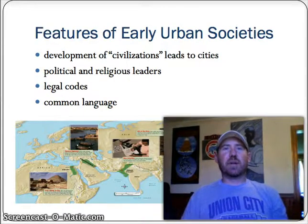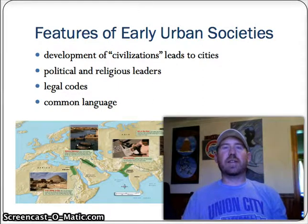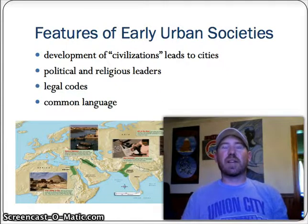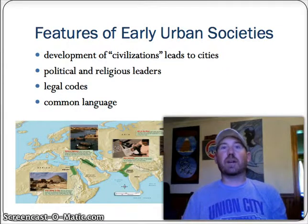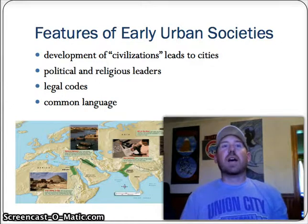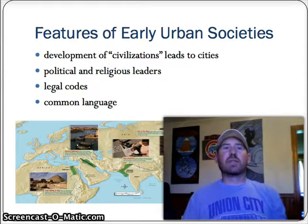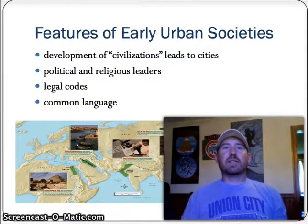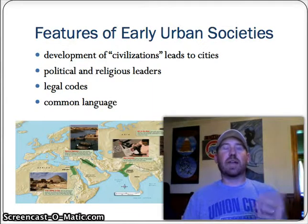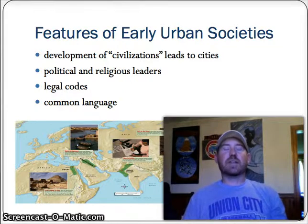Next on our list is the features of early urban societies. Once the Neolithic Revolution happens, you begin to see agricultural settlements, and as these settlements get bigger, they begin to show the markings of civilization — and one key component is cities. Some features: you have political and religious leaders who are often intertwined, sometimes the same person. You also have legal codes such as the Code of Hammurabi or the Code of the Assyrians. You need to think about how they differentiated between social hierarchies — were the punishments the same for people at the top and bottom of the chain? You also see the development of a common language from people living together and conducting everyday business.